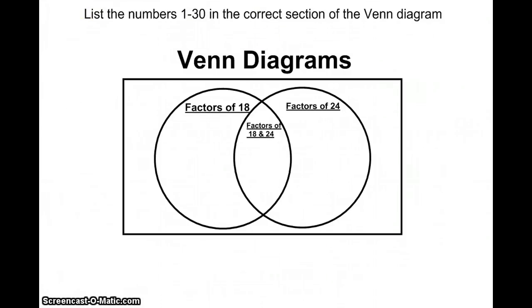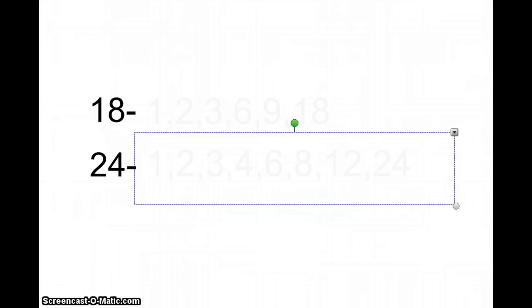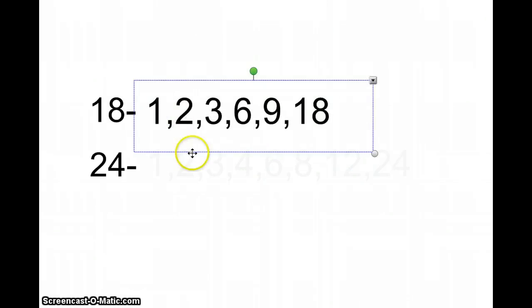So since we've been working with factors for a while, the first thing you would have to do would be to list the factors of 18 and 24. So I know from my experience of working with factors that the factors of 18 are 1, 2, 3, 6, 9, 18.